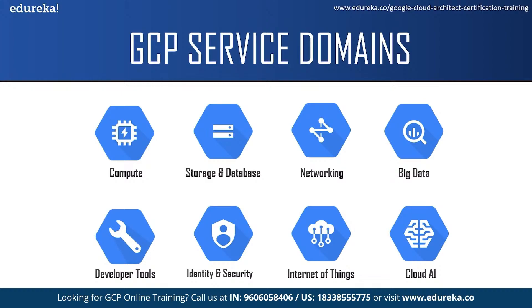Those were some of the core service domains in GCP. Google also provides a free trial to all new customers, offering $300 in free credit to fully explore Google Cloud Platform. You can use this $300 to try various Google Cloud products. You won't be charged until you choose to upgrade, and it is valid for 90 days. GCP also has a free tier where customers can use selected products like Compute Engine, Cloud Storage, and BigQuery free of charge within specified monthly usage limits.